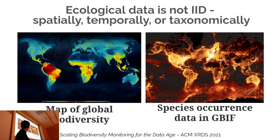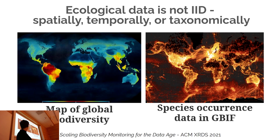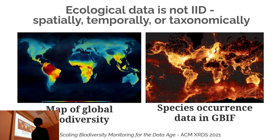The other big challenge I unfortunately haven't solved is that ecological data is just not IID — not independently and identically distributed. It's not IID spatially, temporally, or taxonomically. Not only are the underlying systems changing, but where we collect data is highly biased. Most of the diversity on Earth comes from sub-equatorial tropics, yet the heat map of species occurrence data in GBIF is almost anti-correlated with that diversity. So not only is the data we're learning from highly biased, it's also anti-correlated with the signals we actually want to capture.